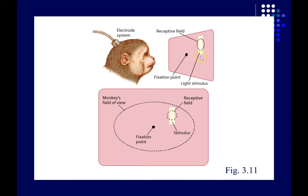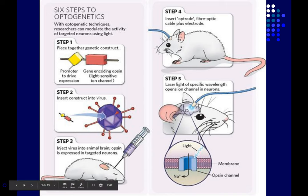Once the monkey is trained up on the task, you implant the electrodes into the part of the brain you're interested in studying. When studying visual cortex, you implant the electrode into some part of visual cortex. Each neuron represents a particular part of the visual field called the receptive field. You can then present different types of stimuli inside the cell's receptive field and figure out what that cell responds to, and also see how its activity changes depending on what the monkey is doing — for example, what it's paying attention to or what it's been trained to remember.